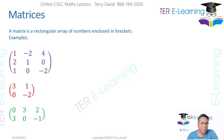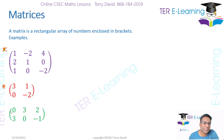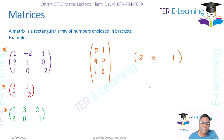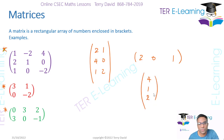When it comes to a matrix, a matrix is simply a rectangular array of numbers enclosed in a bracket. So this here represents a matrix. It's simply a rectangular array of numbers in a bracket. So if I have something like 2, 1, 4, 0, 1, 2 — that's a rectangular array of numbers, and if I enclose it in a bracket, it is considered a matrix. Even if we have something like 2, 0, 1, or 4, 1, 2 — those are also matrices.